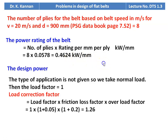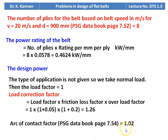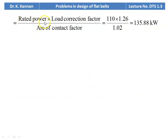Design power calculation: the type of application is not specified, so we take normal load (factor = 1), corrected for friction and overload. Load correction factor = 1 × (1 + 0.05) × (1 + 0.2) = 1.26. Arc of contact factor for 175 degrees, interpolating between 170 and 180 from page 7.54 = 1.02. Design power = 110 × 1.26 / 1.02 = 135.88 kilowatts.